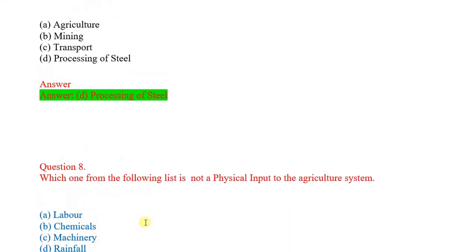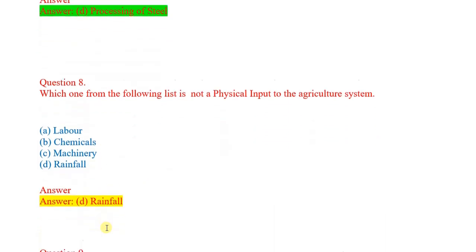Next 8th question: Which one from the following list is not a physical input to the agriculture system? Options: labor, chemicals, machinery, rainfall. Correct answer: rainfall.